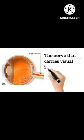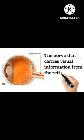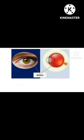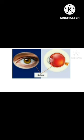Impulses produced by the retina are sent to the brain via the optic nerve. The sclera is the white outer layer of the eye that provides structural support. The sclera, or white of the eye, is a protective covering that wraps around the eye.